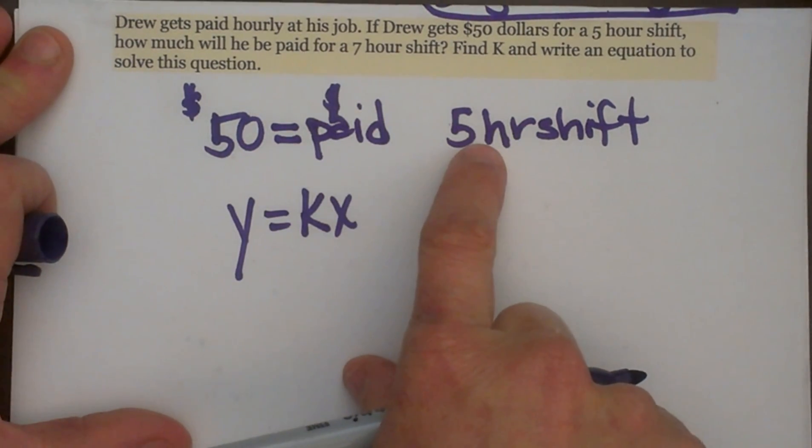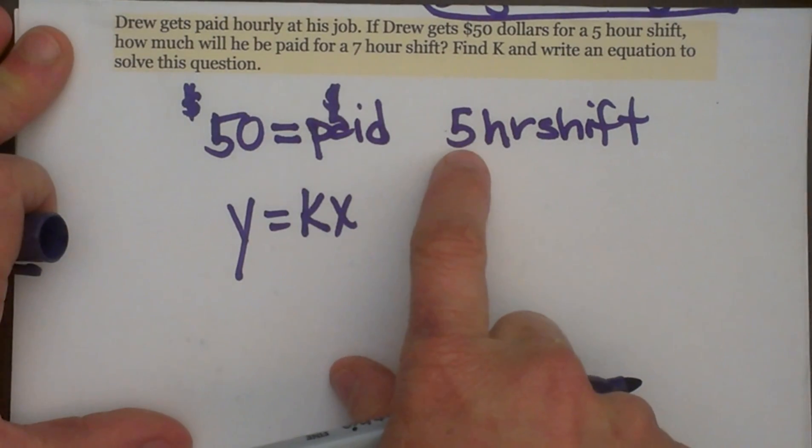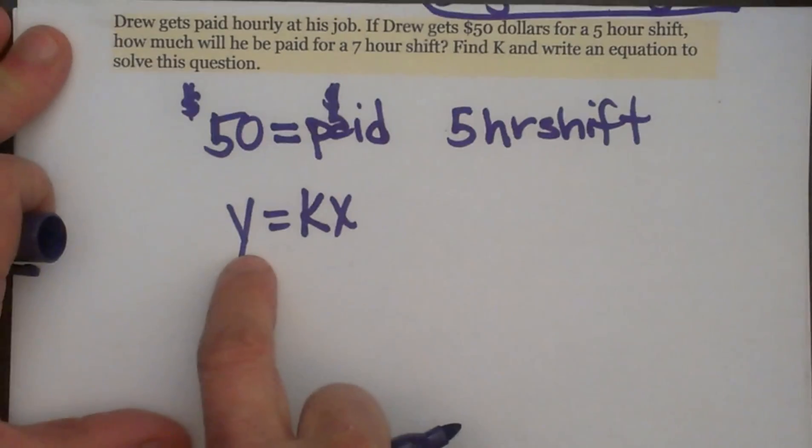So depending on how many hours he works depends on how much money he is paid. So that means the hours he works is our independent variable, our X, and the output of what he is paid is dependent on the number of hours that he works. So it's Y.